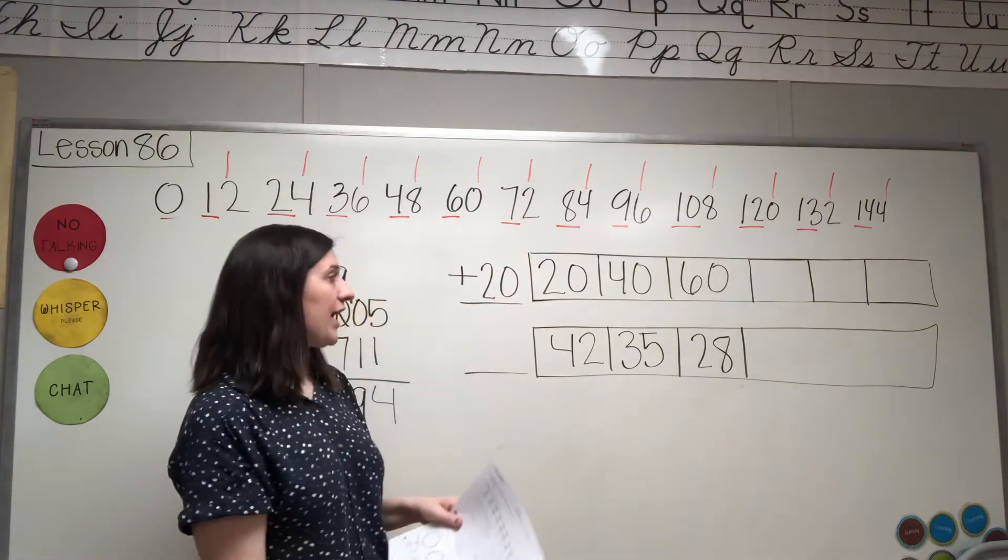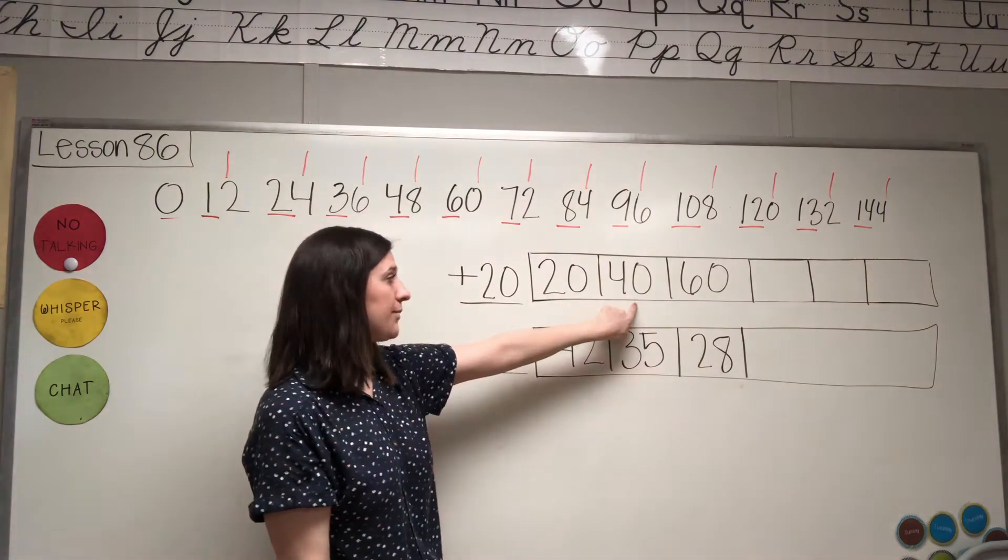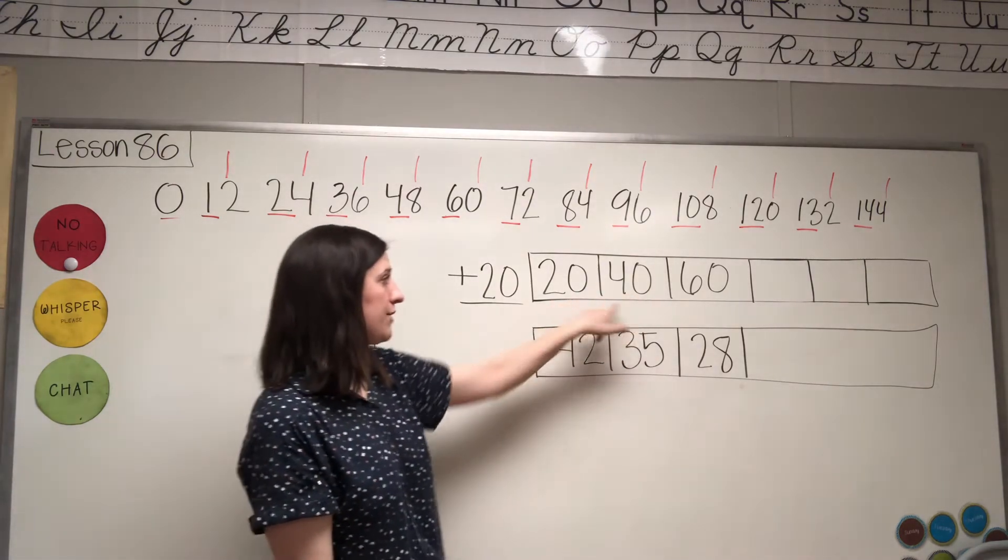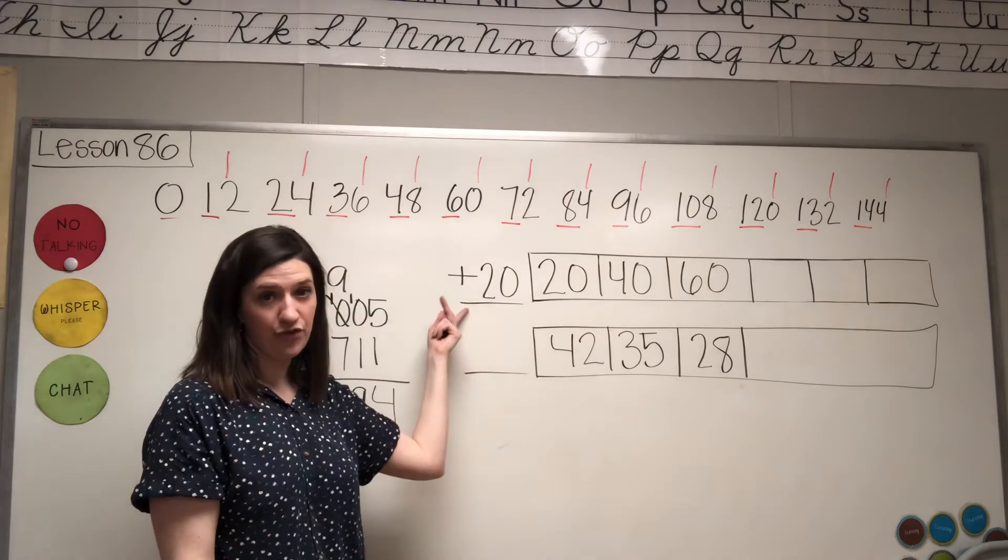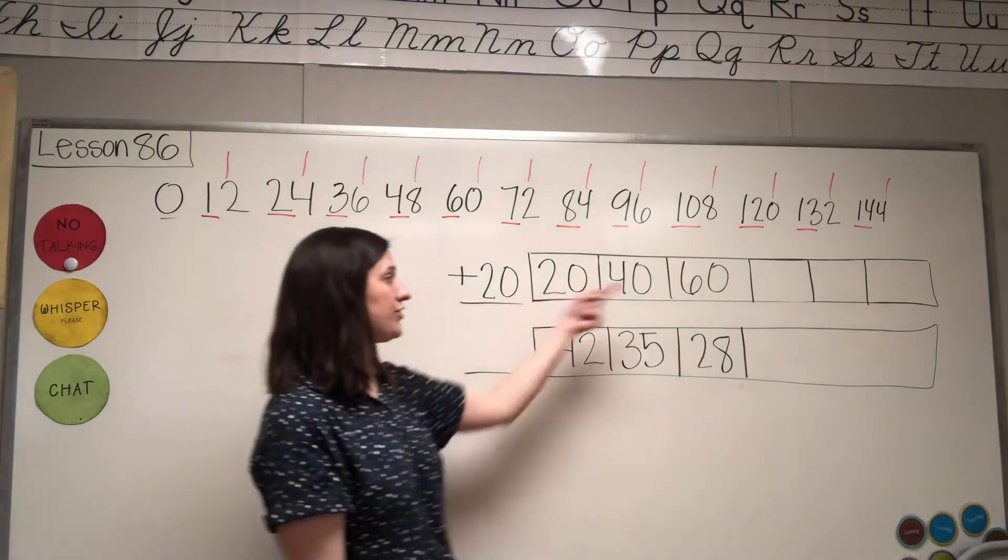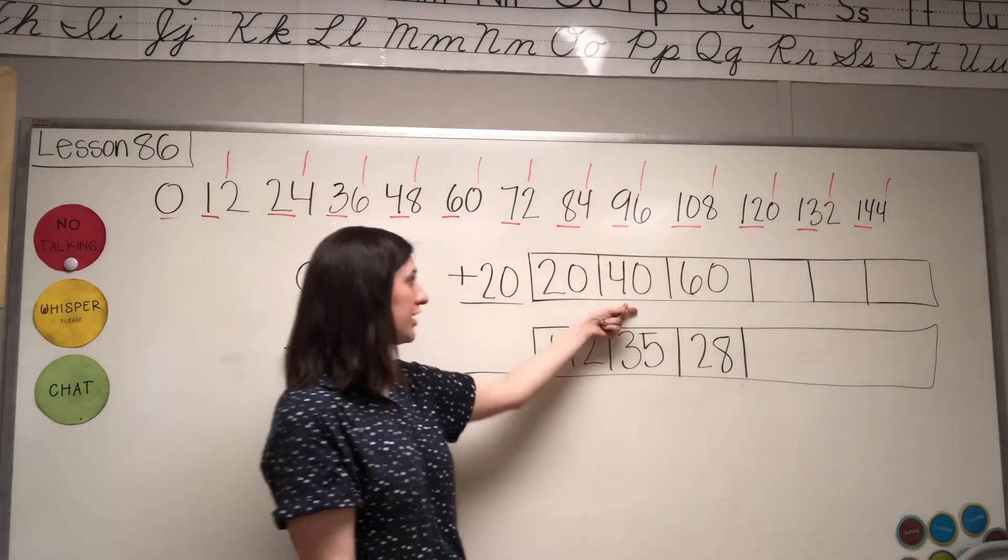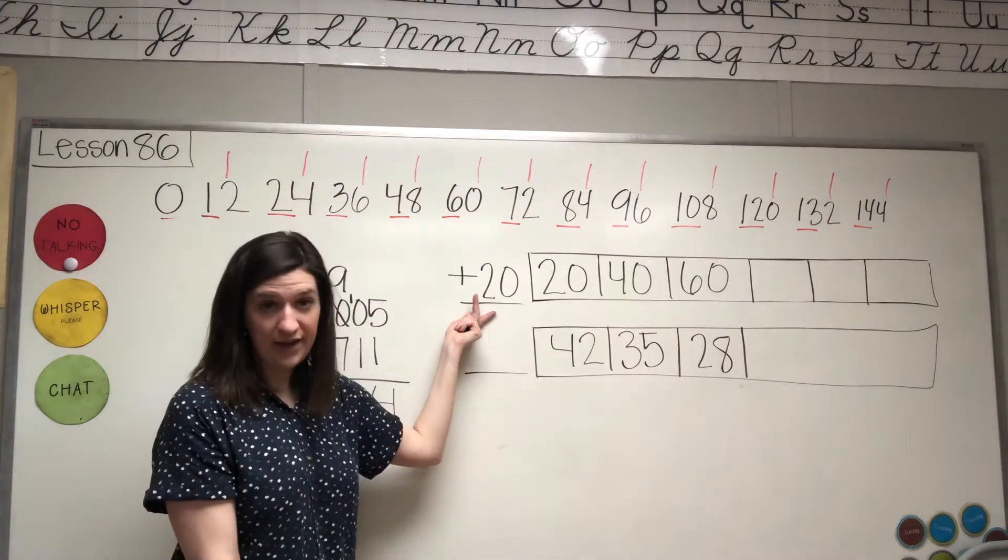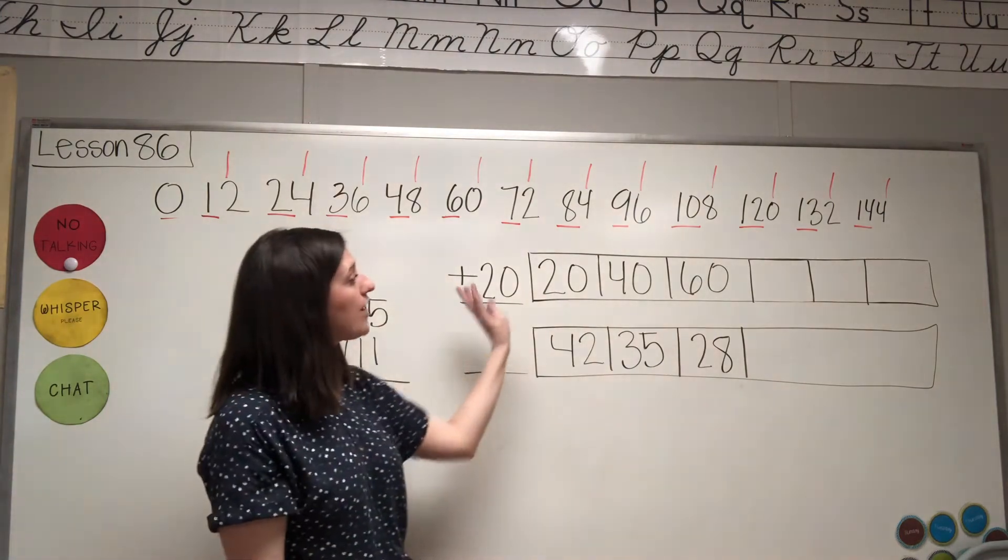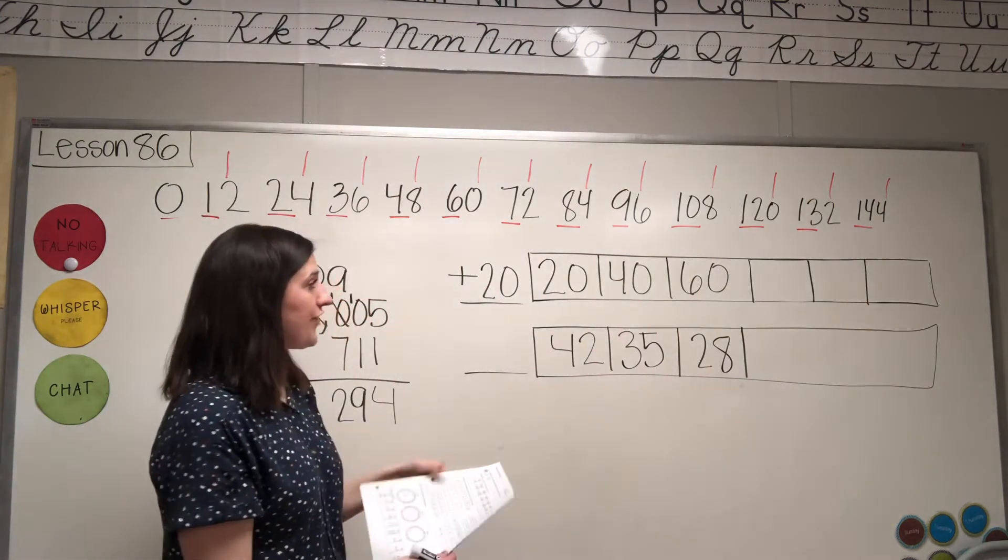Another way to figure that out is if you take this big number minus this number, 40 minus 20, the answer is 20. That's what your pattern is. Or if you were to take 60 minus 40, your answer would be 20. So that's what the pattern is. But now we have to add by 20s.